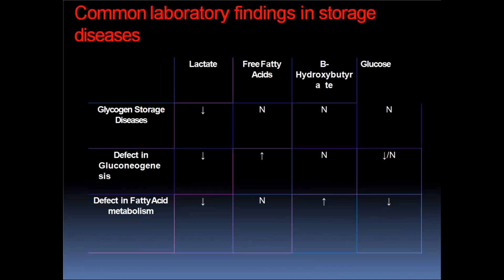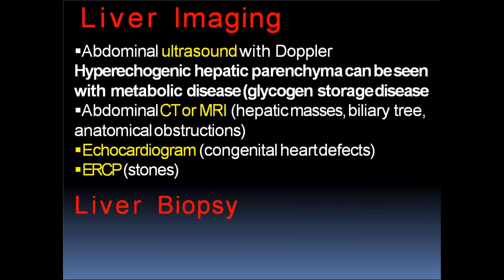Common laboratory findings in storage disorders: in glycogen storage disorder, lactate decreases; defect in gluconeogenesis also causes lactate decrease; defect in fatty acid metabolism causes lactate decrease. Free fatty acids are normal in glycogen storage disorders; may increase in gluconeogenesis defects; normal in fatty acid metabolism defects. Beta-hydroxybutyrate is normal in glycogen storage disorders and gluconeogenesis defects; may increase in fatty acid metabolism defects. Liver imaging: abdominal ultrasound with Doppler — hyperechogenic hepatic parenchyma seen with metabolic diseases; abdominal CT or MRI for hepatic masses, biliary anatomy, and anatomical obstructions; echocardiogram for congenital heart defects; ERCP for stones; liver biopsy when indicated.